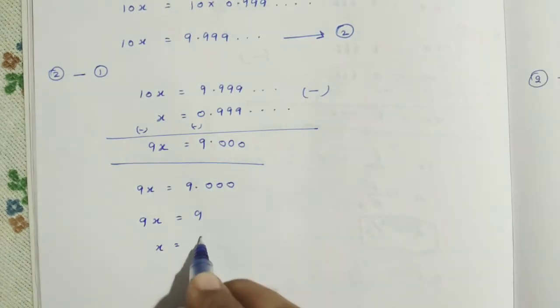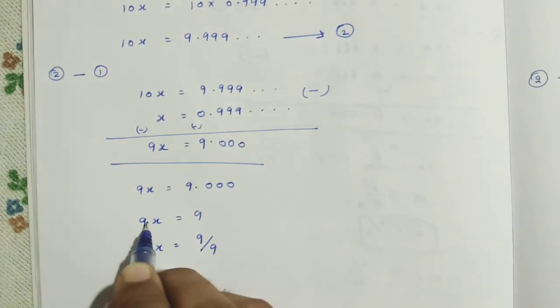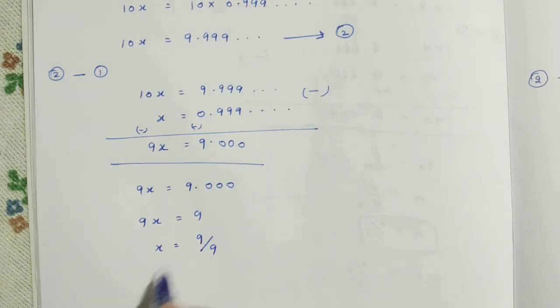Then, X is equal to 9 divided by 9. Here, it is multiplication 9. So, it will go across the equal side and become divided by 9. So, X is equal to, 9 divided by 9 is 1. So, now, the X value is 1.